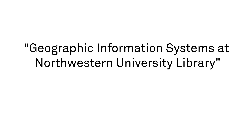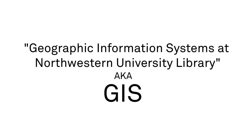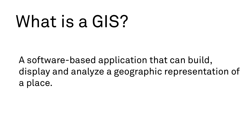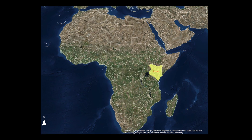Welcome to Geographic Information Systems at Northwestern University Library, also known as GIS. A GIS is a software-based application that can build, display, and analyze a geographic representation of a place. Or you can think of it as layers of information which describe and define the characteristics of any given place.